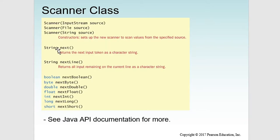Note that the next method will return a string. nextLine also returns a string, but it returns the entire line. next, nextBoolean, nextByte, nextDouble, nextFloat, nextInt, nextLong, and nextShort are all token scans — they return the token. Remember, a token is delimited by space; Java looks for a space to separate tokens and read in that input. You can also go to the API documentation to learn more about these methods and the Scanner class.